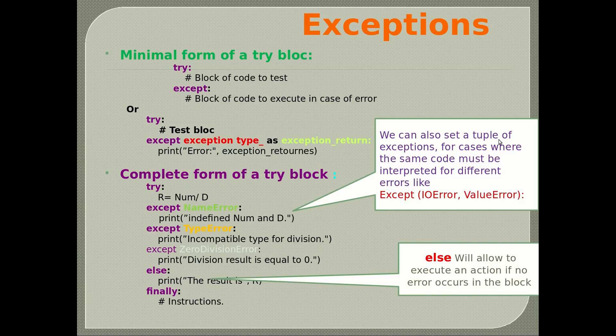Minimal form of a try block: try — block of code to test; except — block of code to execute in case of error, or with an exception that can be caught and a message printed on screen. We can also set two types of exceptions for cases where the same code must handle different errors, like except (IOError, ValueError). We can have several except statements for different errors, and include a finally clause. Else allows executing an action if no error occurs.